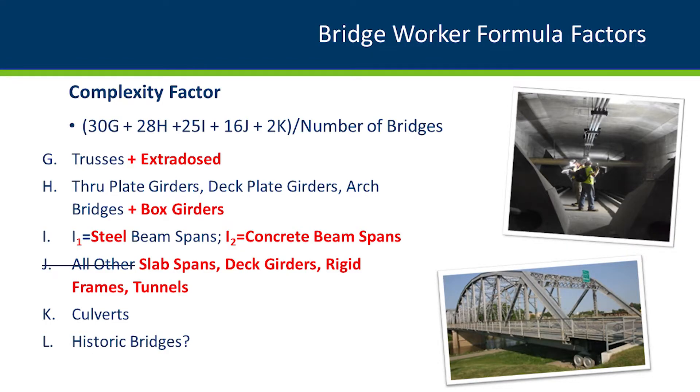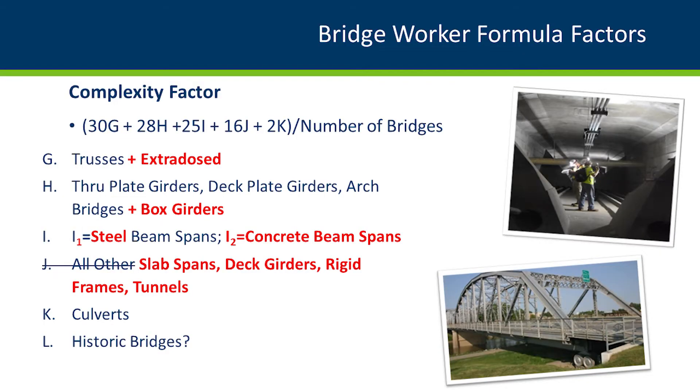We're considering adding additional parameters to the formula to address multi-lane structures that are harder to access and close. The complexity factor is based on structure type — the more complex the structure, the more labor hours needed to maintain it. As our design standards and types have changed, we needed to add more categories within the structure types identified by the formula. The empirical values — 30, 28, etc. — are associated with each structure type. We also need to consider historic bridges, which typically have a maintenance plan associated with them and may require special materials or techniques, potentially warranting a separate empirical value.